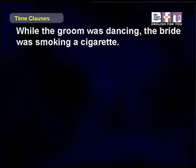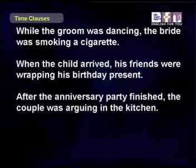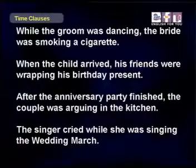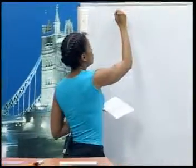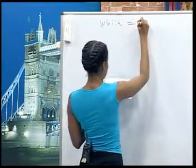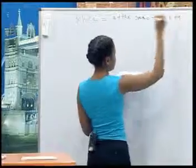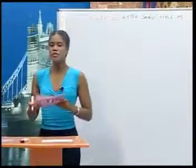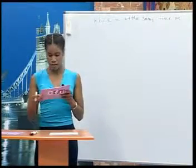We can also use the past continuous in time clauses. Let's have a look at some examples. While the groom was dancing, the bride was smoking a cigarette. When the child arrived, his friends were wrapping his birthday present. After the anniversary party finished, the couple was arguing in the kitchen. The singer cried while she was singing the wedding march. In these sentences, the simple past and the past continuous are used. While means the same as at the same time as. The past continuous must be used in a time clause introduced by while. The verb in the main clause can be simple past or past continuous.